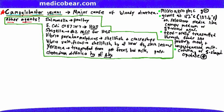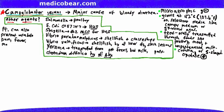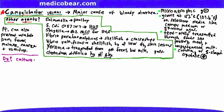Along with inflammatory diarrhea, the patient can also present with abdominal pain, fever, malaise, nausea, and vomiting. Diagnosis is done by culture on Skirrow agar, which can also be done at 42 degrees Celsius.